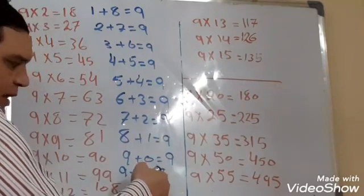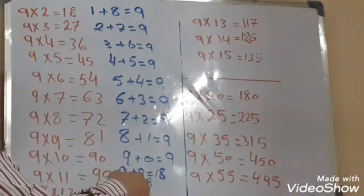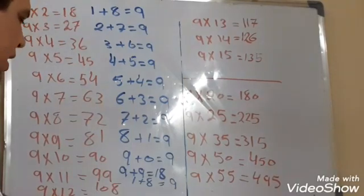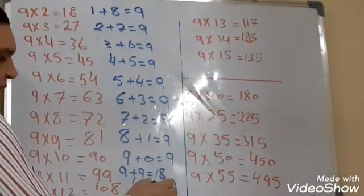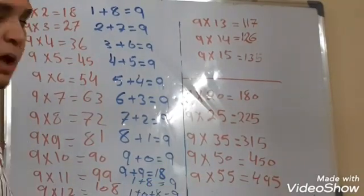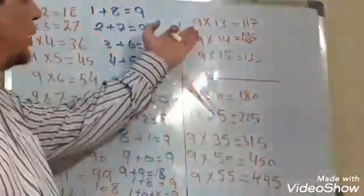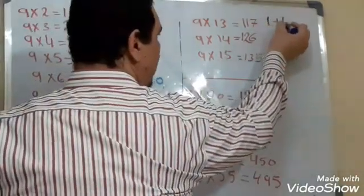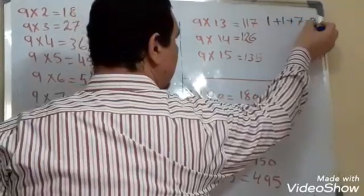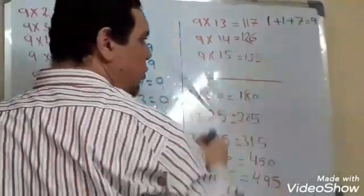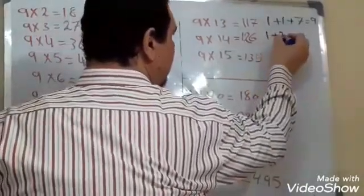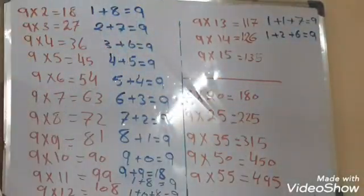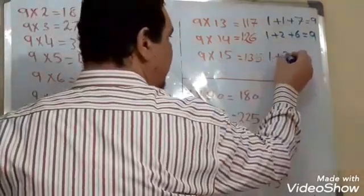Nine times twelve equals 108 — 1 plus 0 plus 8 equals also nine. We can continue with larger numbers: nine times thirteen equals 117 — if we add 1 plus 1 plus 7 equals nine. Nine times fourteen equals 126 — if we add 1 plus 2 plus 6 equals also nine.